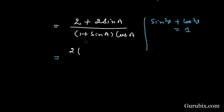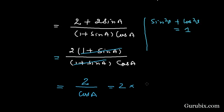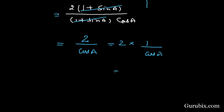We can take 2 common from the two terms in the numerator, leaving (1 + sin A) in the bracket. The (1 + sin A) in the numerator and denominator cancel out, and we are left with 2 over cos A. We can write this as 2 times (1 over cos A), and 1 over cos A equals sec A. So this equals 2 sec A, which is the right hand side. This completes the proof of the identity. Thank you.